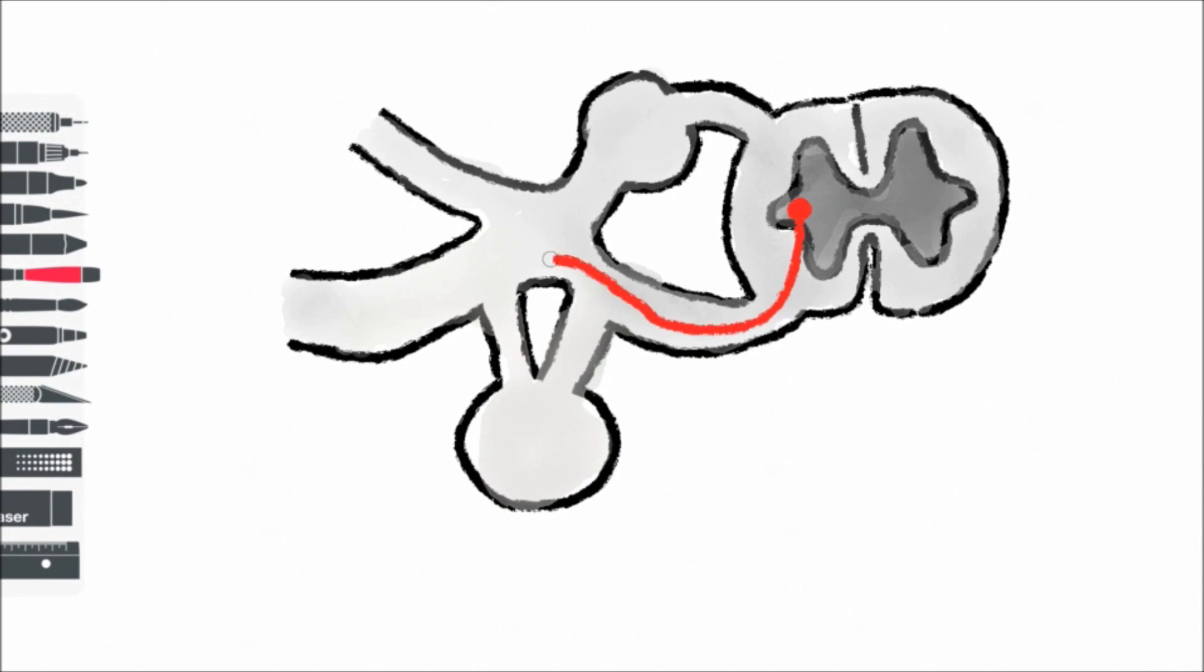Postganglionic neurons transmitting sympathetic innervation to the limbs, to the body wall, for example muscles causing the hair in your arms to stand on end, they will return from the sympathetic chain to the spinal nerve and then they will be distributed either via the ventral ramus or the dorsal ramus.